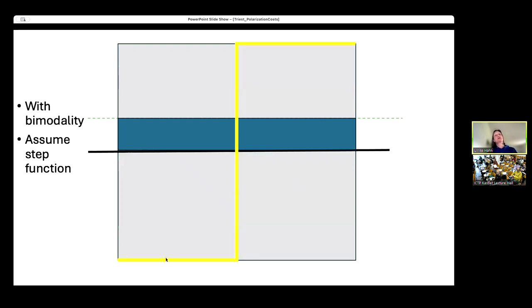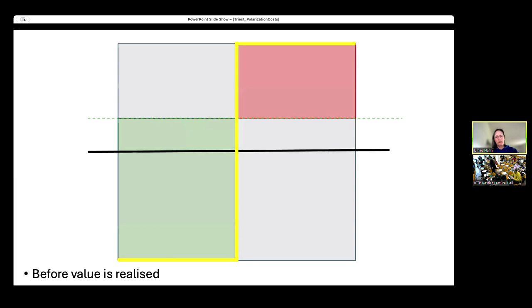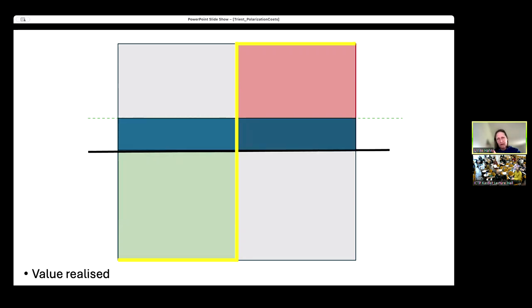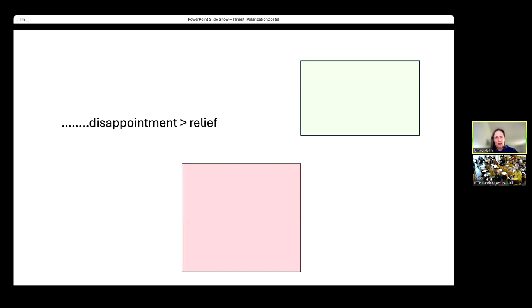I'm going to start by assuming the base case where there's no uncertainty. Everybody knows what the true expected value is. They all know that this dashed line price is a bargain and this is the difference in expected value that they're going to harvest. Now, let's assume there's uncertainty. I'm just going to assume for simplicity a completely split society. They think this prospect is worth zero and everybody else thinks it's worth the maximum value.